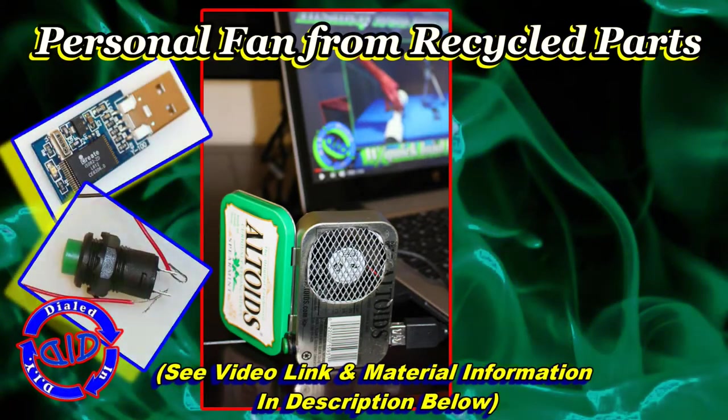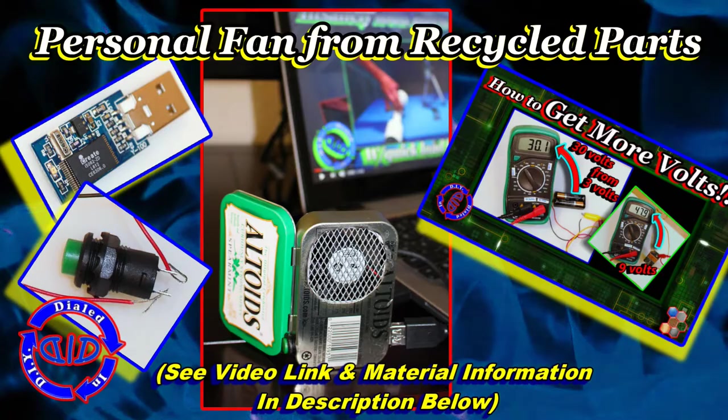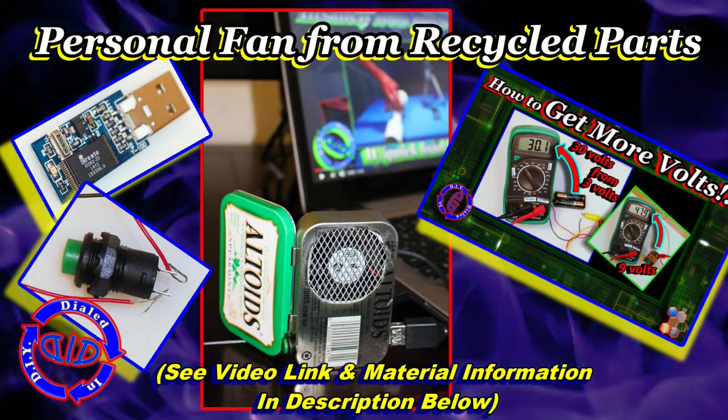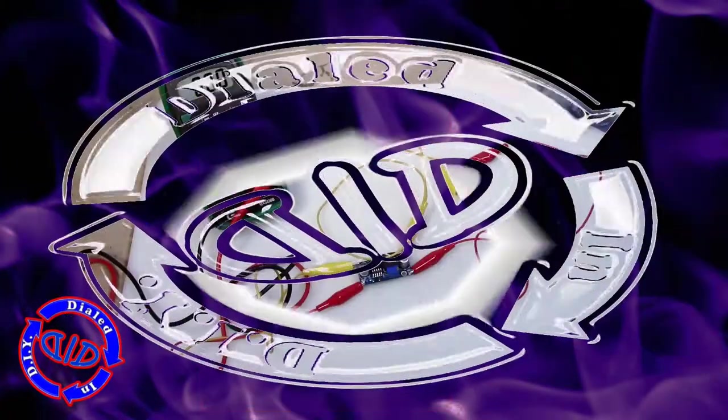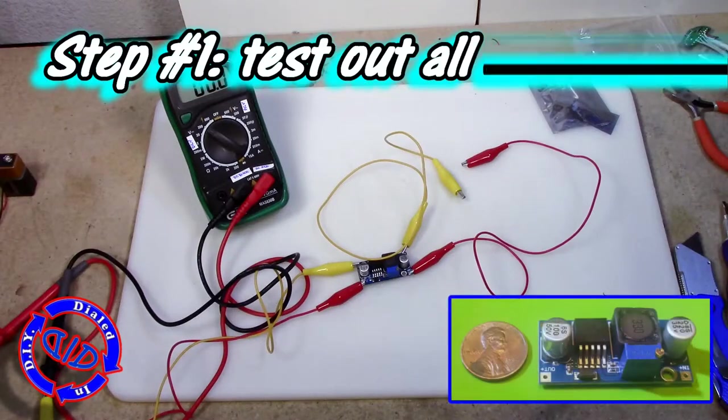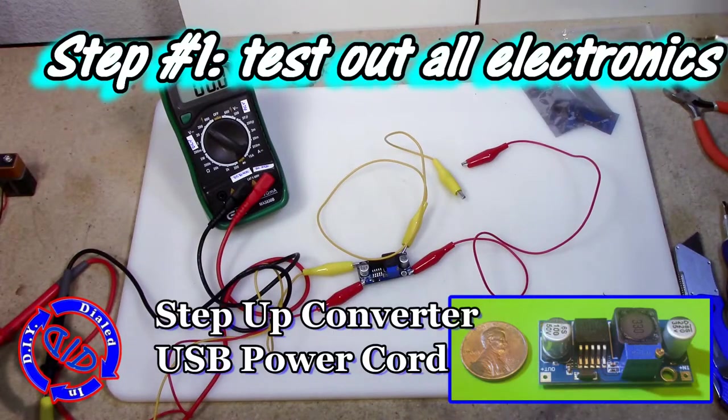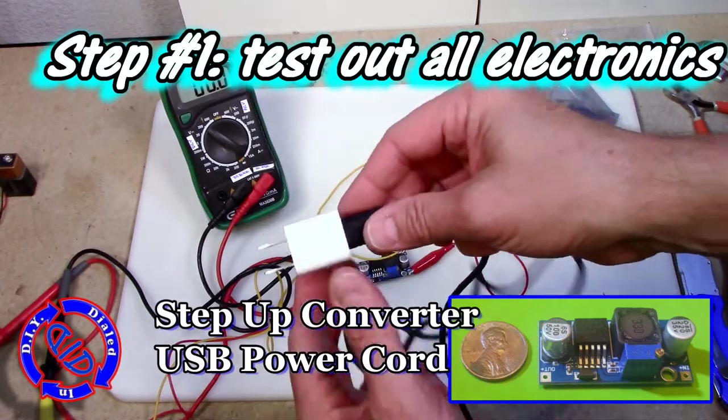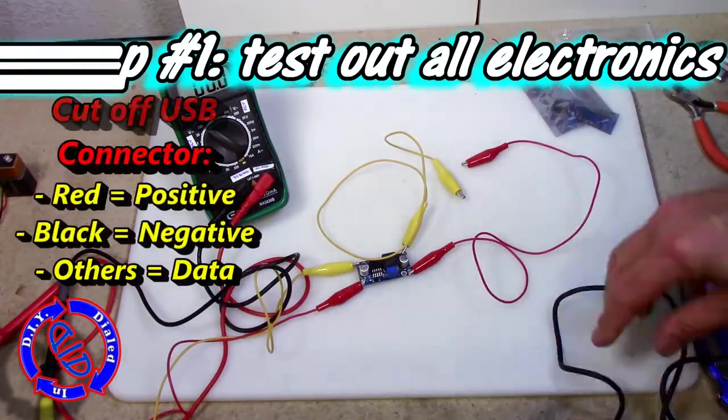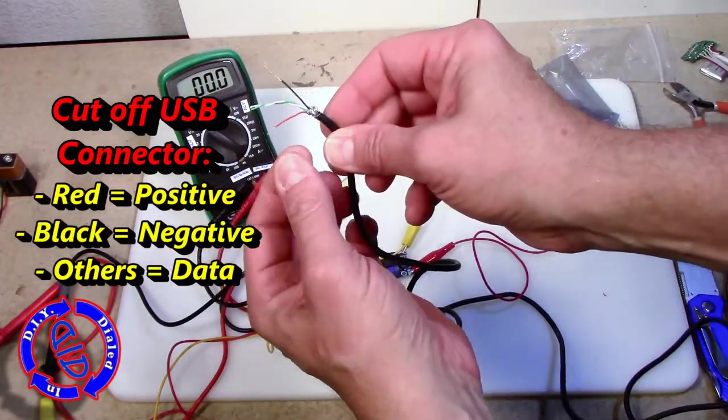Today I'm recycling or repurposing just about every part I need in this project except for one piece, and you can find a lot more details about all of these in the description below. In a recent video linked in the description, I used a handy little device called a step-up converter to get more volts out of batteries. We're going to do the same thing today to get more volts out of our USB.